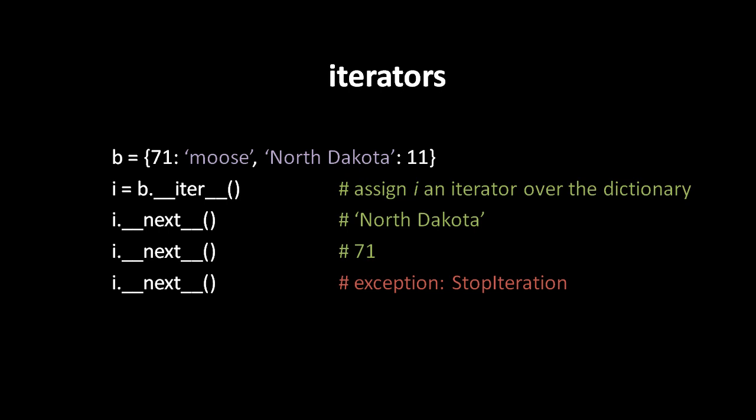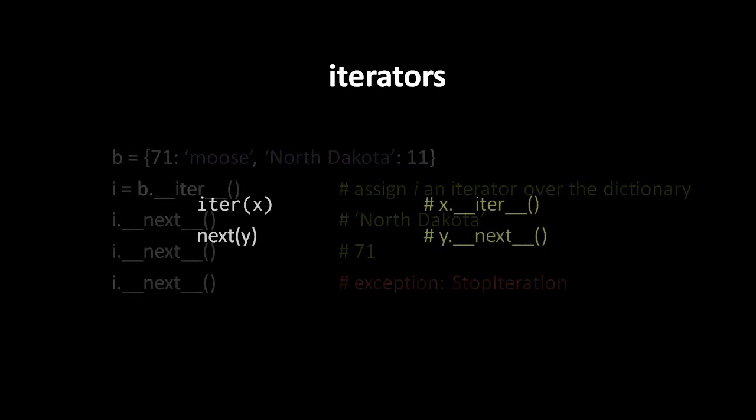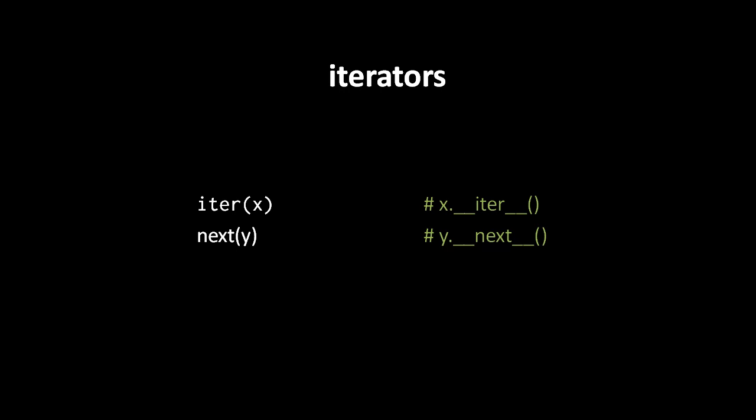The method names in Python that begin and end with double underscores indicate that you're generally not intended to invoke those methods directly. The proper way to invoke iter and next is to pass the objects to the built-in functions of the same name, without the double underscores. The instructor notes some uncertainty about why Python designed it this way — it would make more sense to have methods simply called iter and next — but this is how it is.